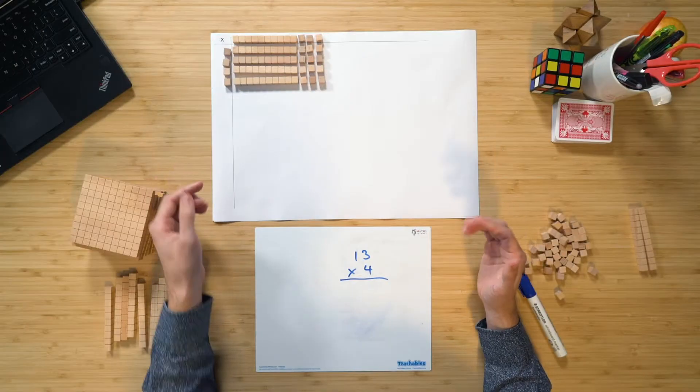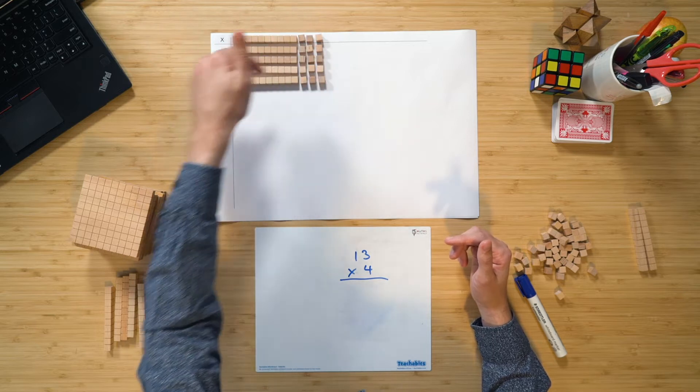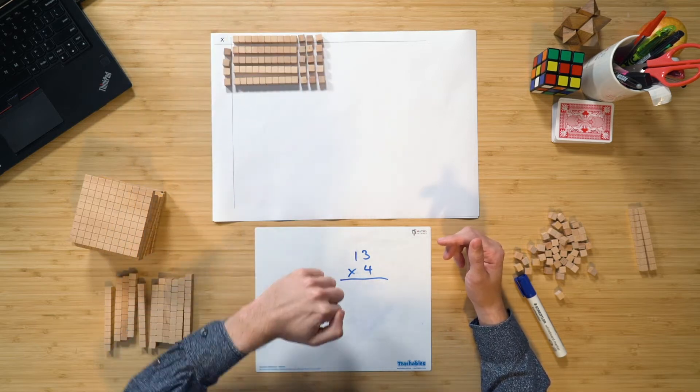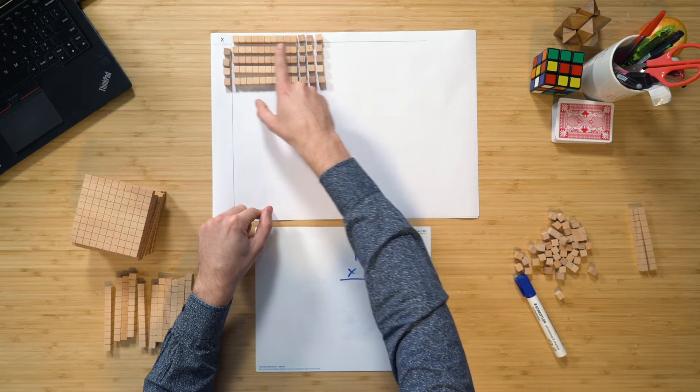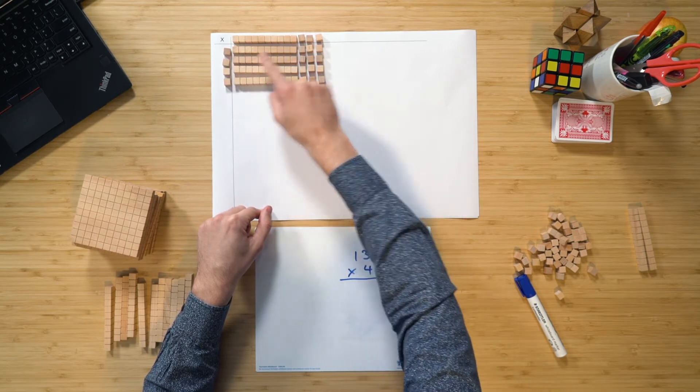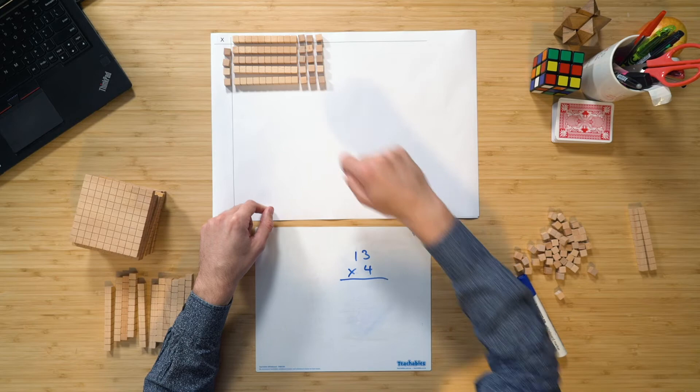So, there you have it. You can see 4 times 13, my questions on the outside of the multiplication chart, and my answers on the inside. The 4 times the 1 10 is 4 10s, and the 4 times the 3 1s is going to be 12 1s.